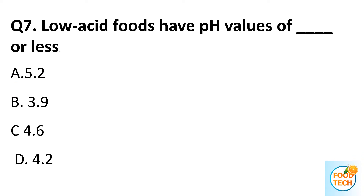Question 7. Low acid foods have a pH value of dash or less. A. 5.2. B. 3.9. C. 4.6. D. 4.2.